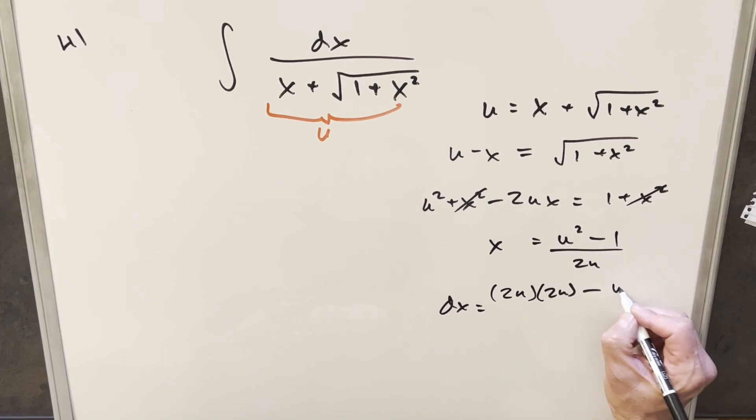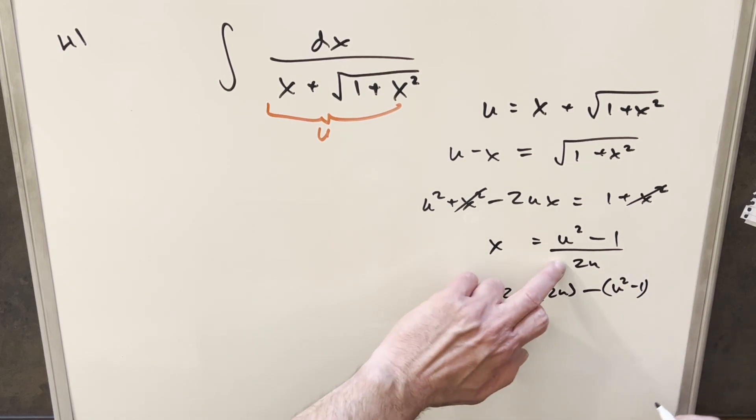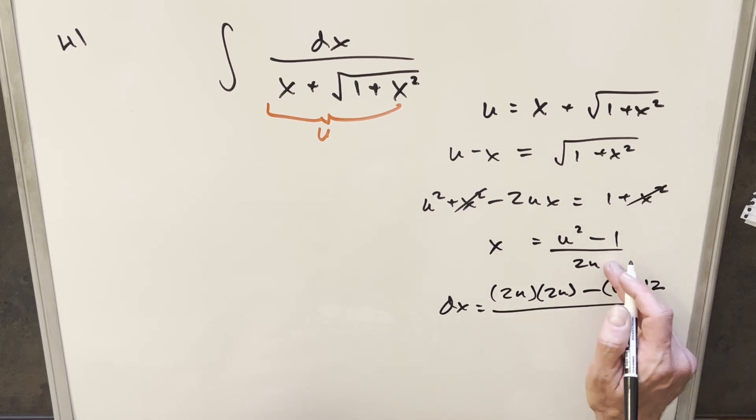We'll bring over this u squared minus 1. Take the derivative of the denominator, that's going to give me a 2 here. And then we just square the denominator, and that's going to be 4u squared.